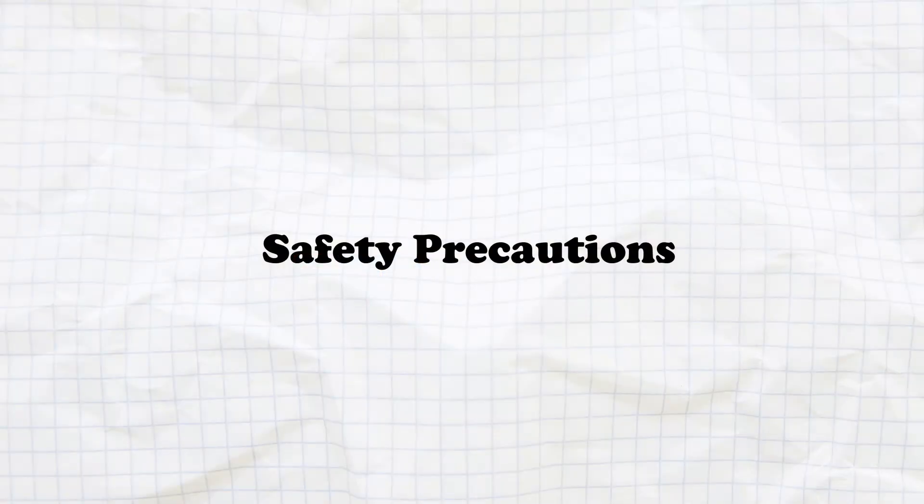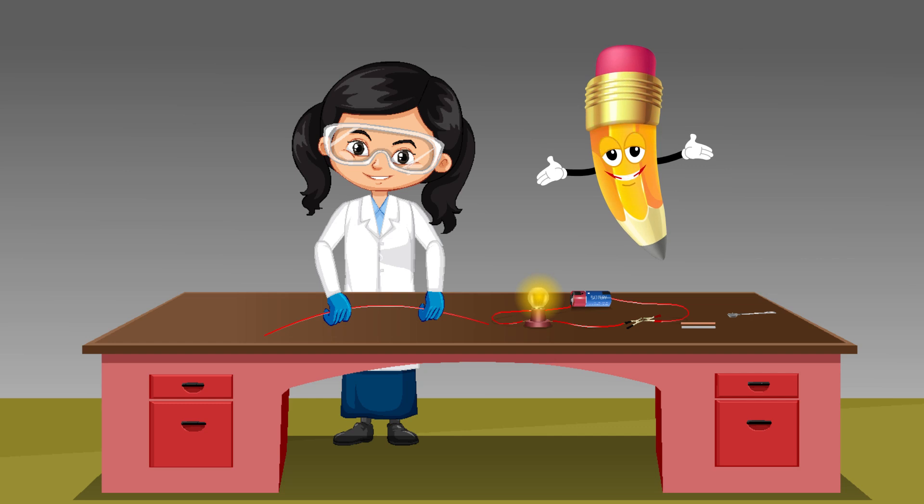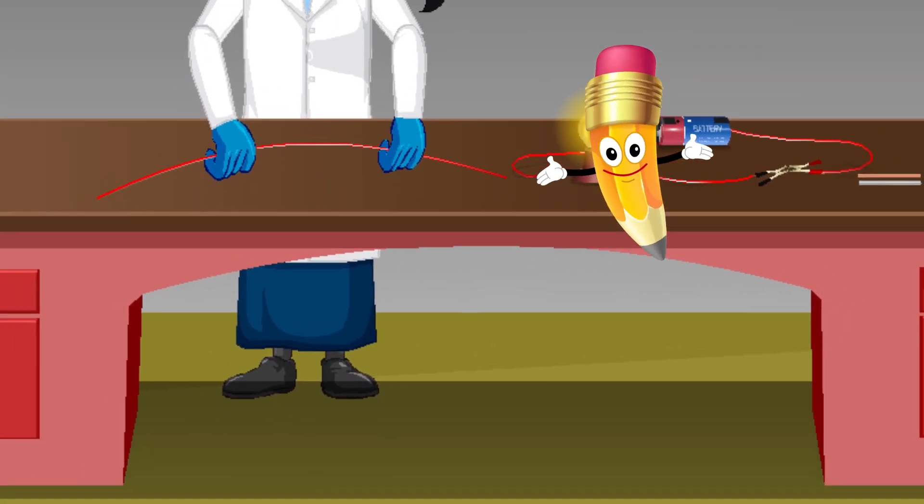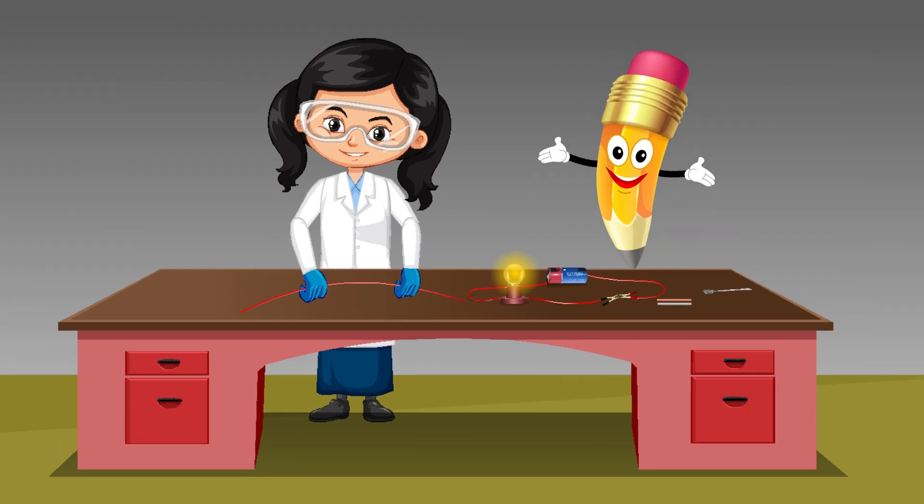Safety precautions. When working with electricity, safety is key. Always handle electrical appliances with care and wear rubber gloves and shoes. Make sure to use insulated wires to prevent electric shocks.